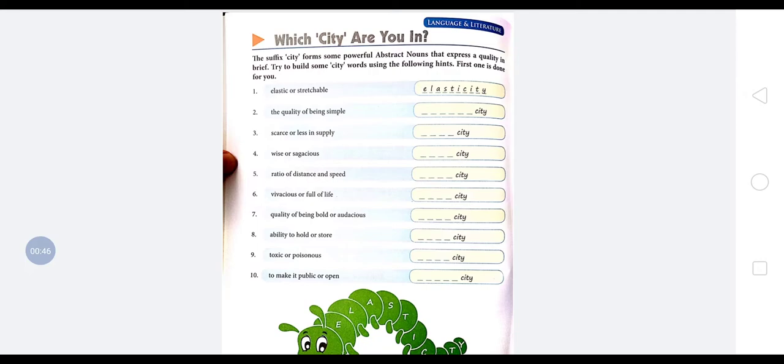So yeh jo word 'city' hai, isa mai word ke baad, har word ke baad lage ga. And yeh powerful abstract noun bana raha hai that expresses a quality in brief. Bahut baar yeh quality ko bahut short pe samjha deta hai, this word. So here we will try to build some city words using the following hints, okay?